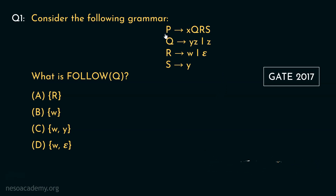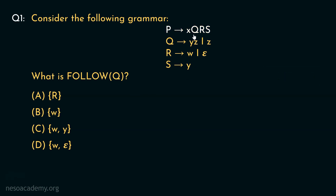If you observe the production rules, P can be rewritten as lowercase x followed by uppercase Q, R and S. Then Q can be rewritten as lowercase y, lowercase z or lowercase z. We also have two more production rules involving R and S. We are required to find out the follow of Q. If you remember the previous sessions, the follow of Q is actually the first of R. So basically, in order to find out the follow of Q, we need to find out the first of R.